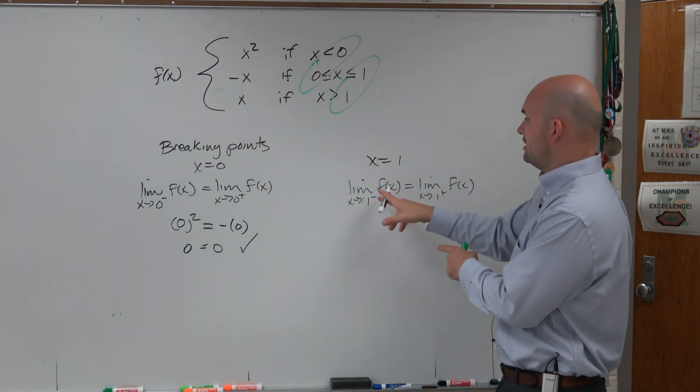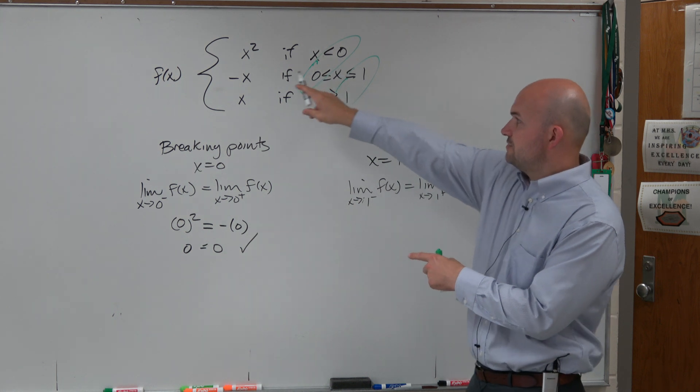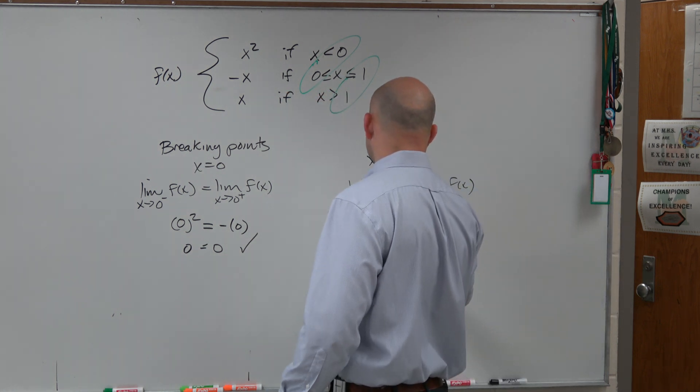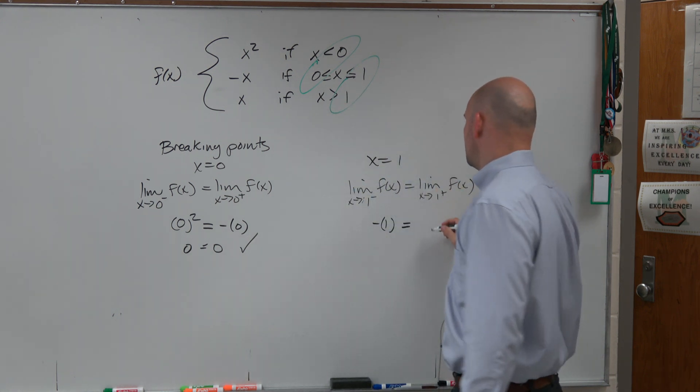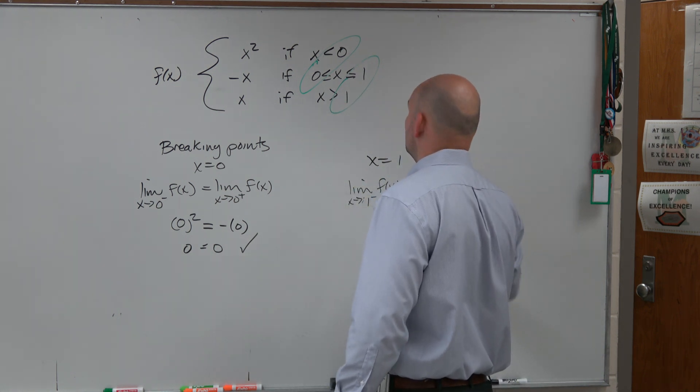Then the left-hand limit of 1 is going to be this function, which is negative 1. So negative 1 has to equal the right-hand limit, which is just going to be 1.